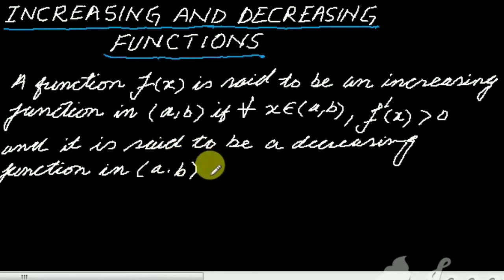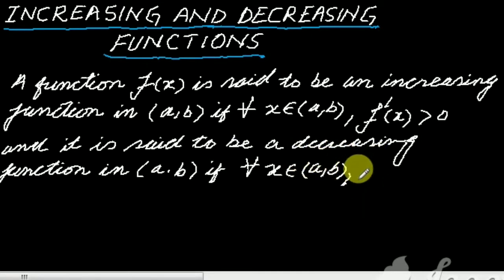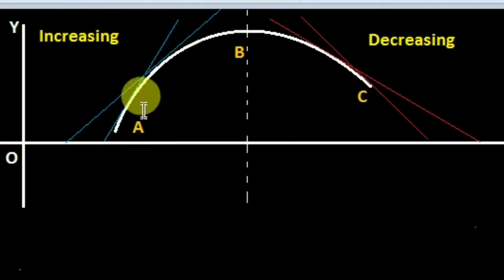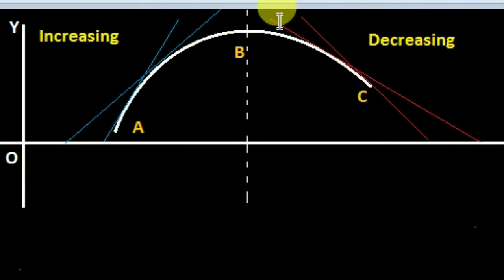And it is said to be a decreasing function in interval (a, b) if for all x belonging to (a, b) — that is, at each and every point — the value of the first derivative, f'(x), is negative.